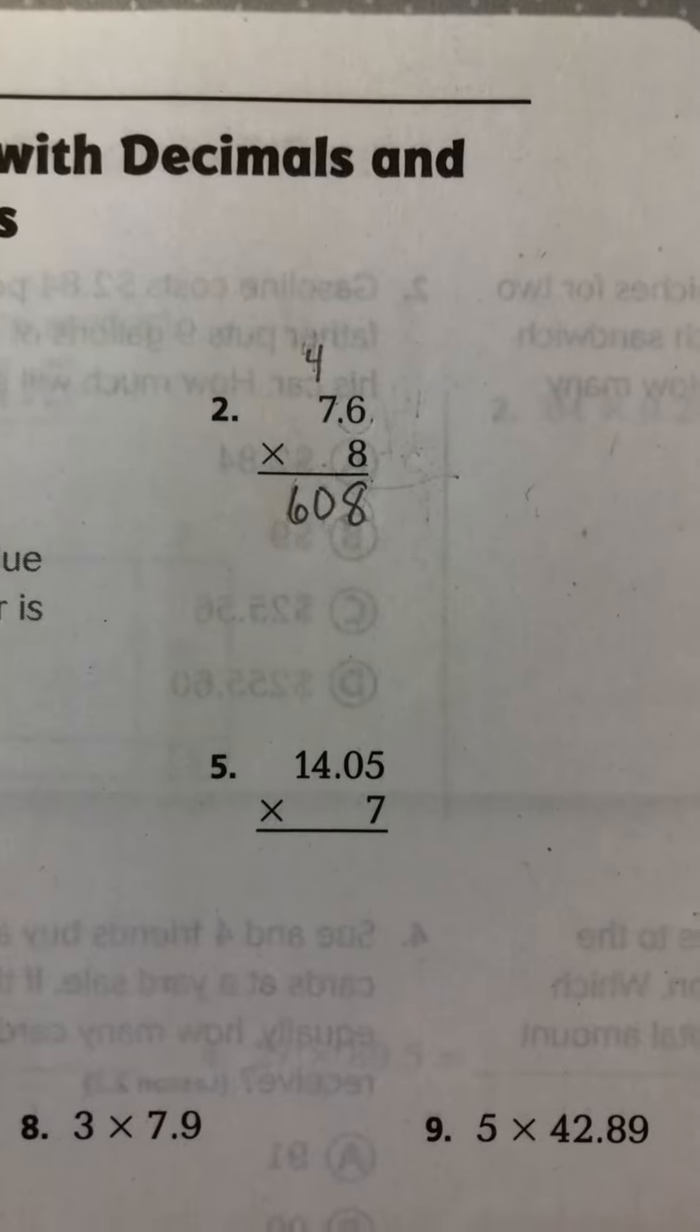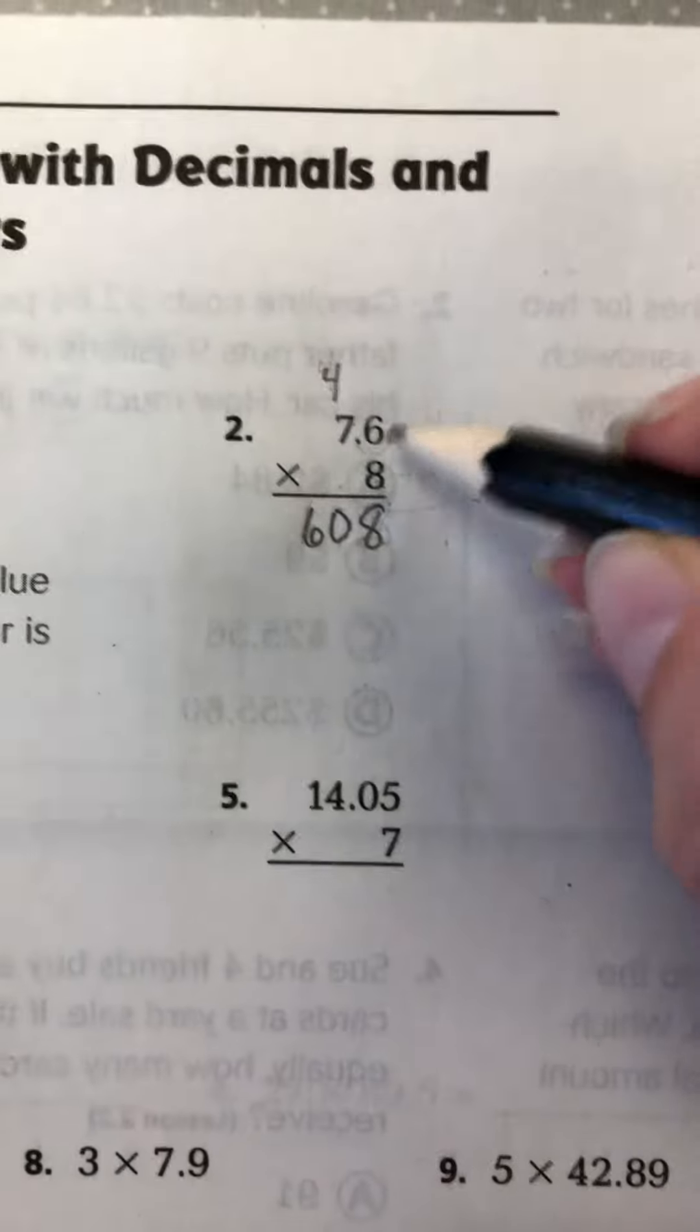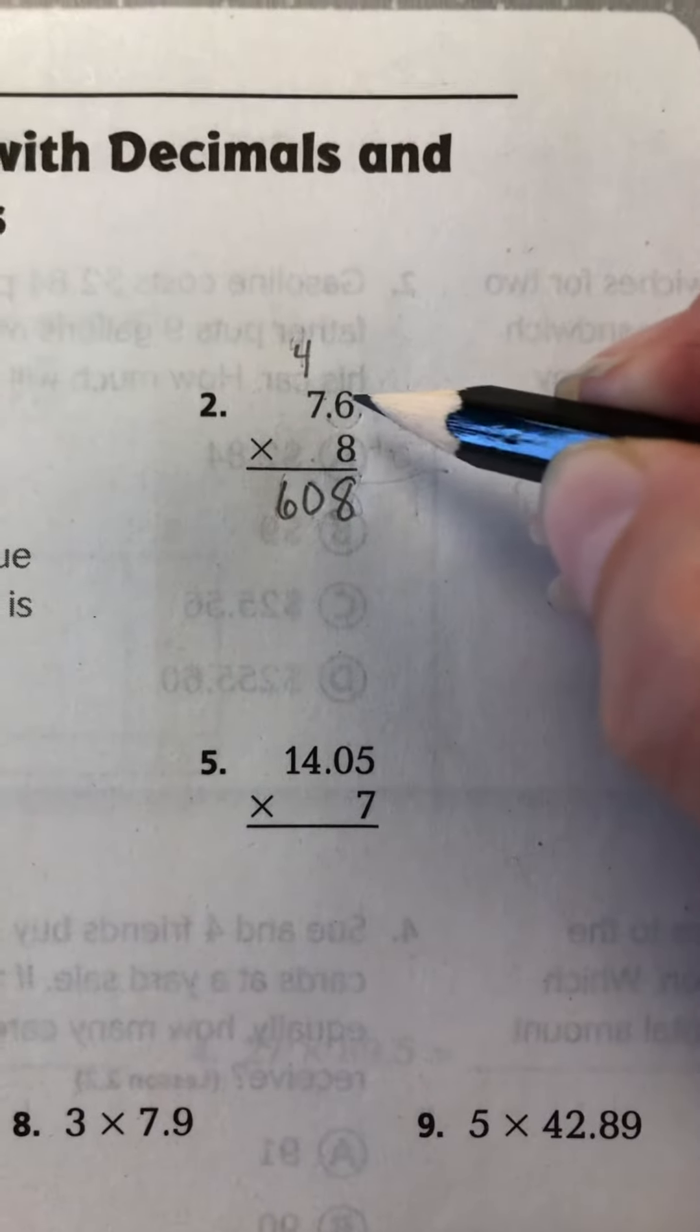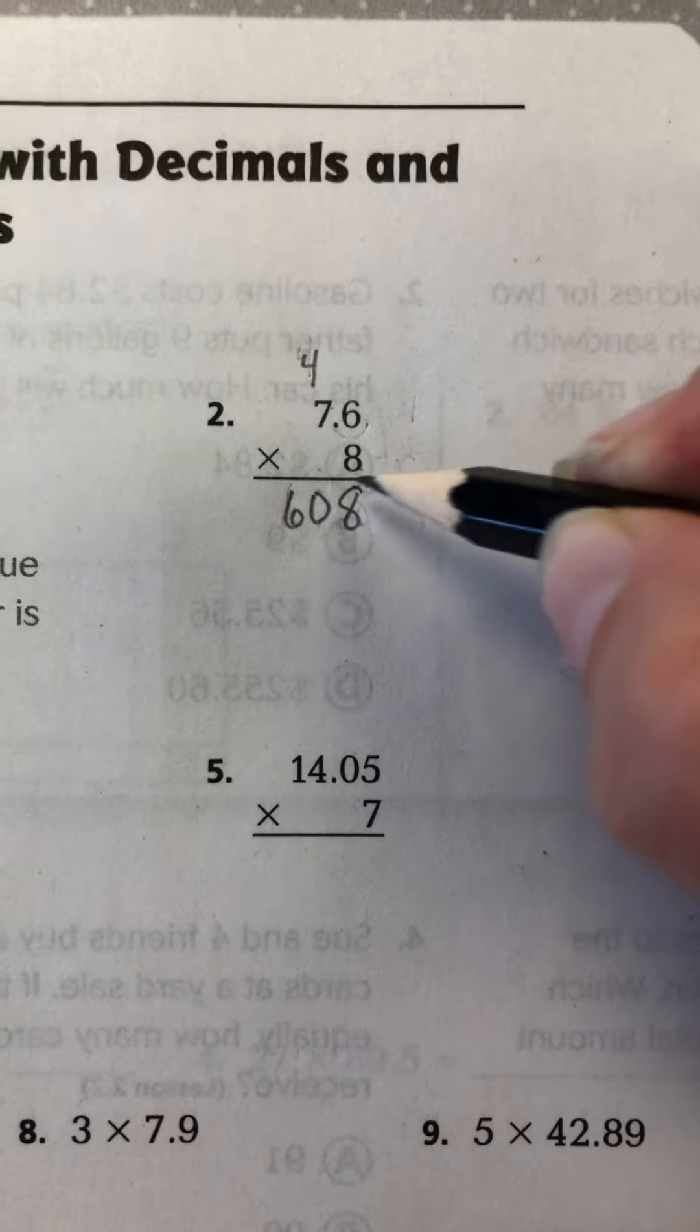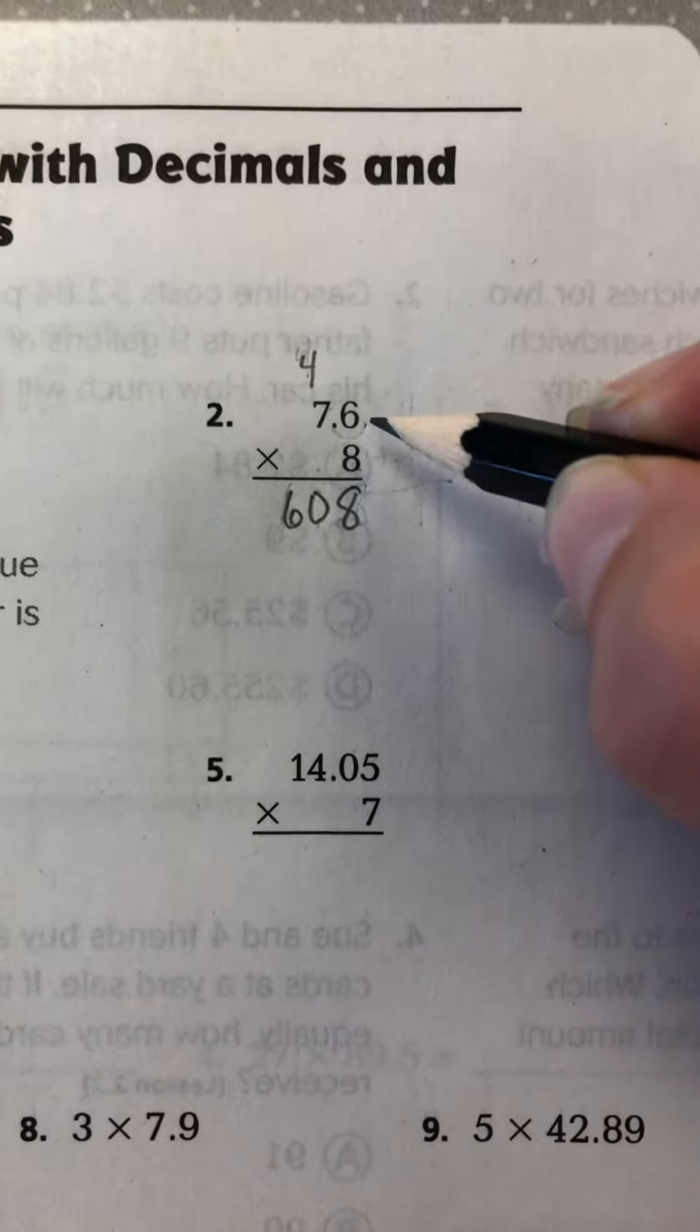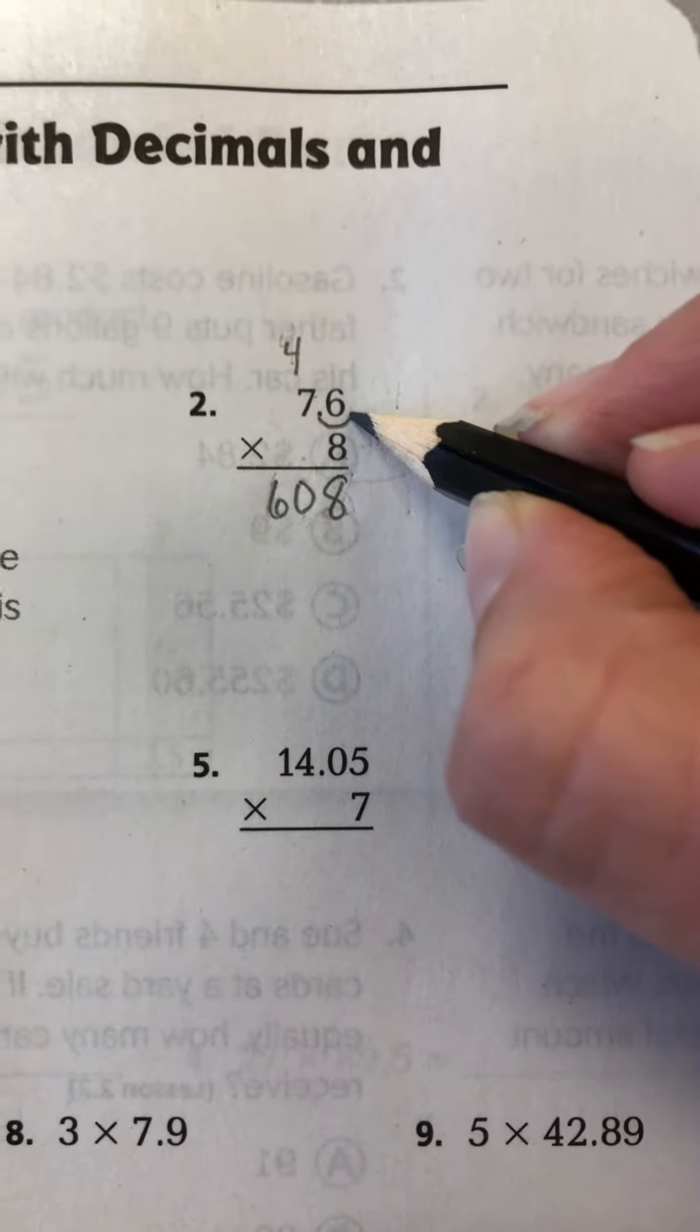So instead, what we're going to need to do is add our decimal point back in. Here's how you do it. You find the number that has the decimal, which is up here. This is a whole number, so we don't need to really pay attention to this one just now. So go back to this one.